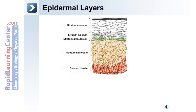Now let's discuss the different layers of the epidermis. As shown in the image here, the epidermis is made of five layers: the stratum corneum on the surface, the stratum lucidum, the stratum granulosum, the stratum spinosum, and the stratum basal, or the basal layer.